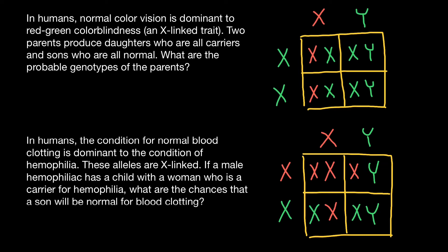So what are the chances that a son will be normal for blood clotting? As you see, 50% of the sons would be phenotypically and genotypically normal. The answer is 50%, not one quarter, because the question is not about all the children but about just the sons. The female carrier's phenotype would be normal since this is an X-linked recessive genetic disorder. In such a family, 50% of all children would be affected and 50% would not be affected.